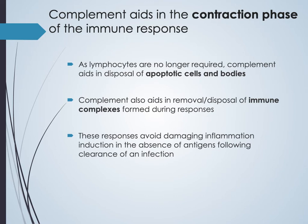Complement plays a critical role in clearing apoptotic cells and their fragments. It also helps clear immune complexes — antibody-antigen complexes circulating in the blood need to be removed, and complement assists by initiating phagocytes to engulf that material.